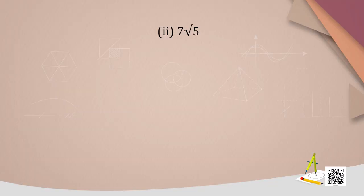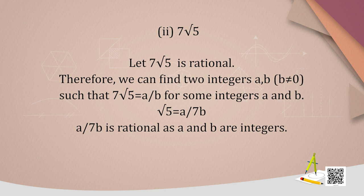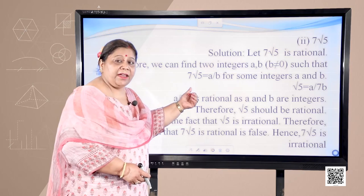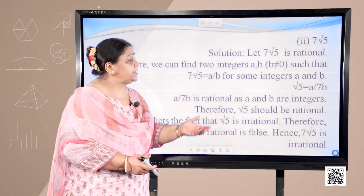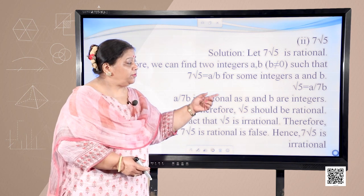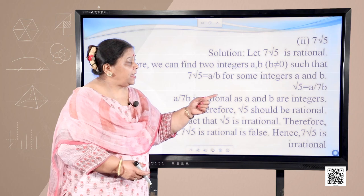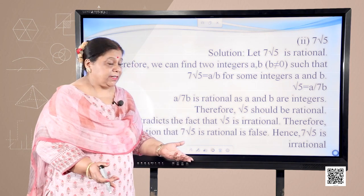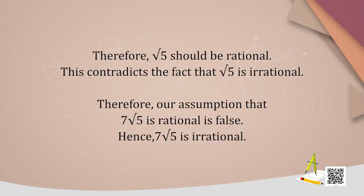Next, prove that 7√5 is irrational. Let 7√5 be rational. Therefore we can find two integers a and b, b not equal to 0, such that 7√5 = a/b. So √5 = a/(7b). Since a and b are integers, a/(7b) is rational, therefore √5 should be rational. This contradicts the fact that √5 is irrational, therefore our assumption that 7√5 is rational is false. Hence 7√5 is irrational.